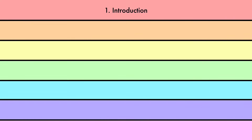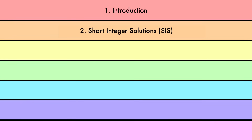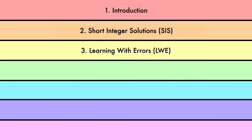The remainder of this course is comprised of six lectures. In the second lecture, I'll introduce the Short Integer Solutions problem, SIS, and some of its variants. We'll see one application of SIS: the collision-resistant hash function. In the third lecture, I'll introduce the Learning with Errors problem, LWE, and some of its variants. We'll see one application of LWE: a public key encryption scheme on which Kyber is based.